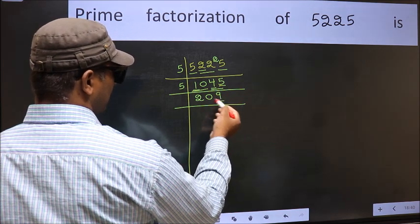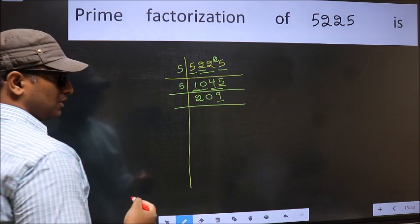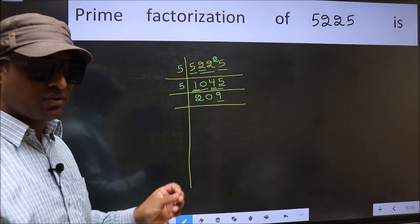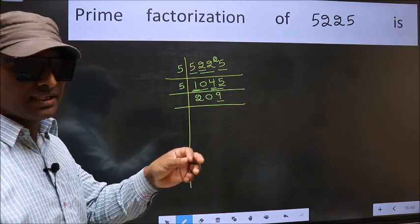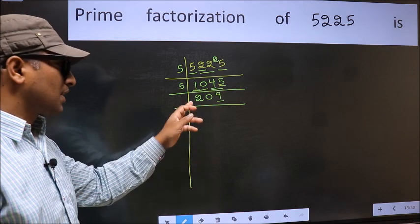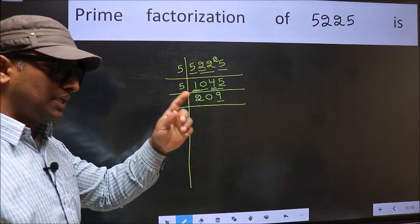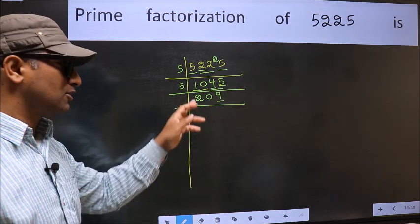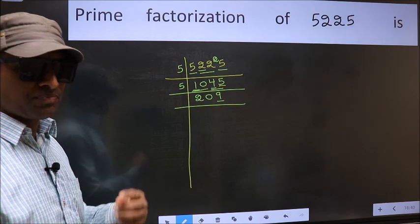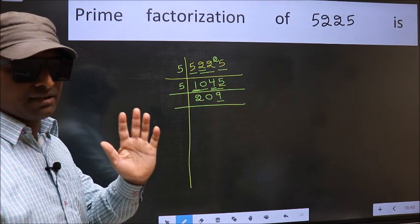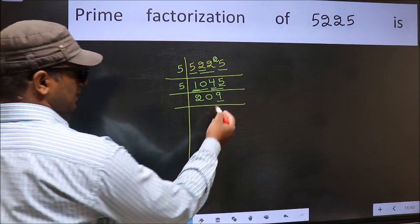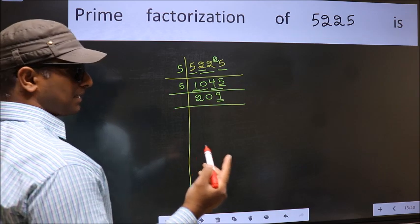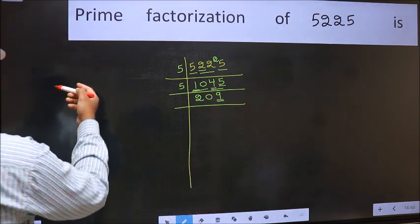Now the last digit 9 is not even, so not divisible by 2. Next prime number 3. To check divisibility by 3, we should add the digits. What I mean is 2 plus 0 plus 9 we get 11. And 11 is not divisible by 3, so this number also not divisible by 3. Next prime number 5. Last digit is neither 0 nor 5, so this is not divisible by 5. Next prime number 7. Let us check divisibility by 7 here.